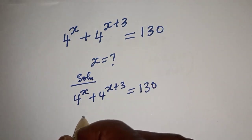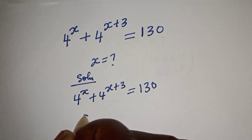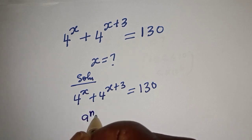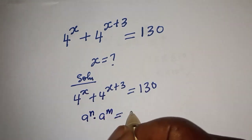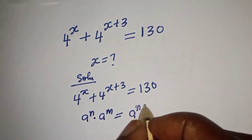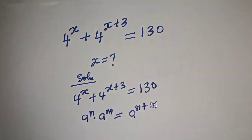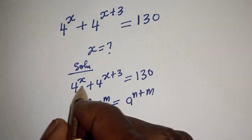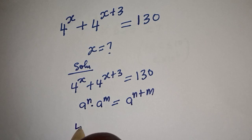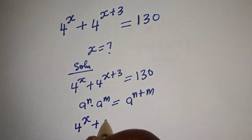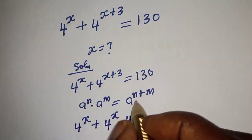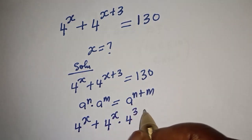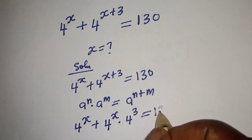Take note of this exponential rule: a raised to power n multiplied by a raised to power m is equal to a raised to power n plus m. Using this rule, the equation can be written as 4 raised to power s plus 4 raised to power s multiplied by 4 raised to power 3 is equal to 130.